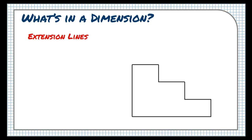Let's review the basic components of a typical linear dimension. First are extension lines. These lines extend from the edge of the object that the dimension is referring to. There's always a small gap between the extension line and the object, so we don't confuse the two.